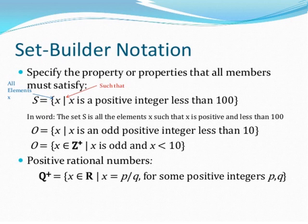Set builder notation: Specify the property that all members must satisfy. Here, S = {x | x is a positive integer less than 100}. This line means 'such that'. In words: The set S is all elements x such that x is positive and less than 100.